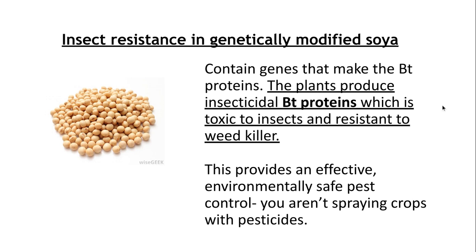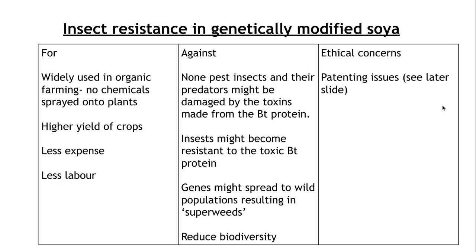A benefit for farmers is that this protein also allows the plant to become resistant to weed killer, which is fantastic because they can spray the crops with weed killer and this modified soya won't be impacted. Some advantages: it's commonly used in organic farming because you don't have to spray pesticides to kill off insects, you get a higher yield of crops as they're not being eaten, and less expense on insecticide with less labour required.